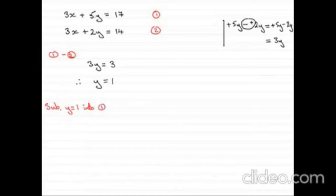And then, we will check whether we get the same answer by substituting the value of y in equation 2 as well. Let's do it in the first equation. 3x plus 5, and the value of y is 1. So 5 times 1 equals 17. Therefore, 3x plus 5 equals 17.